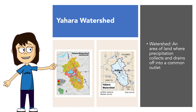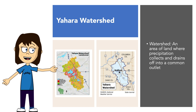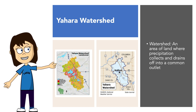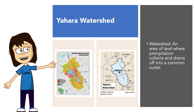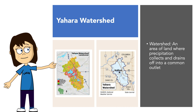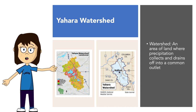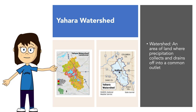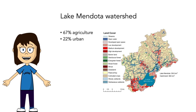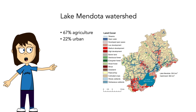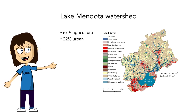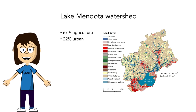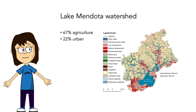A watershed is an area of land where precipitation collects and drains off into a common outlet — in this case, a lake. Here's an image of the Yahara watershed, which encompasses the five major lakes in Madison. Any precipitation, pollutant, or fertilizer put down onto the ground is going to run off eventually into our lakes. Here's a land use map of the Lake Mendota watershed — most of it is agricultural, but there's about 22% urban land use, heavily concentrated in the Middleton area. Dane County is growing and urban land use continues to expand.